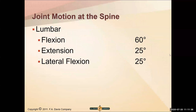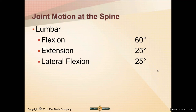Lumbar motion: we can bend forward about 60 degrees, extend about 25 degrees, and laterally flex about 25 degrees. Some newer books say 60-30-30, but 30 degrees of extension seems like a lot - 60-25-25 is more typical.